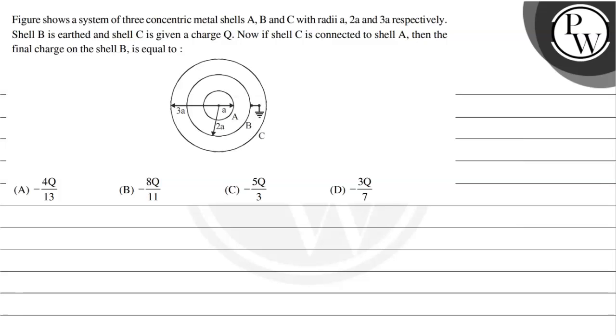Hello Bachu, let's read this question. The question says that figure shows a system of three concentric metal shells A, B, C with radii A, 2A and 3A respectively.